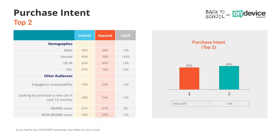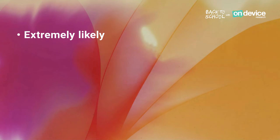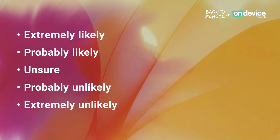Finally, we measure purchase intent, defined as how likely respondents are to purchase the brand tomorrow. This is split out by five statements: extremely likely to purchase tomorrow, probably likely, unsure, probably unlikely, and extremely unlikely. We create a net of the top two box — extremely likely and probably likely. As with consideration, we also measure purchase intent for two competitors to see where the brand sits within the competitive landscape.